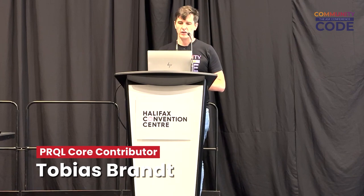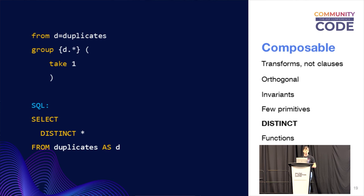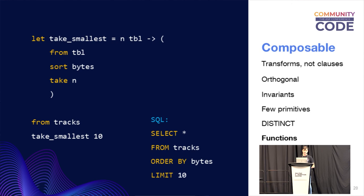Things are composable. For example, we don't have a distinct keyword — so how do you do a distinct in prequel? You think about what you really want: partition by whatever you want to have distinct and then take one from each partition. That's how you create a distinct in prequel — the prequel at the top compiles to the distinct statement in SQL at the bottom.